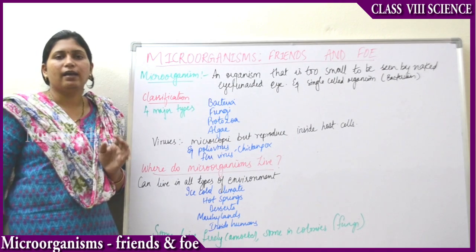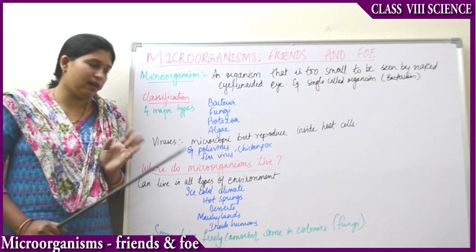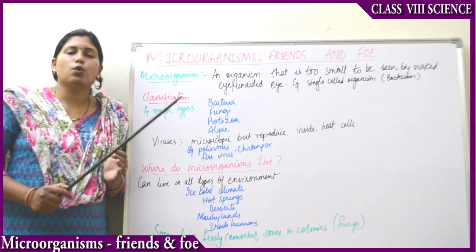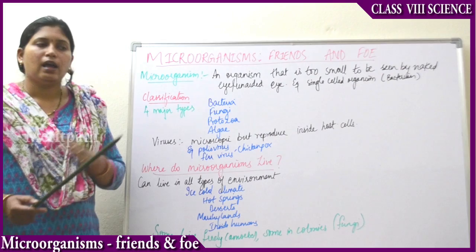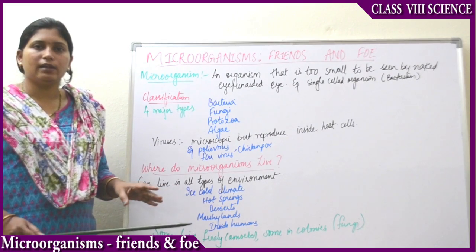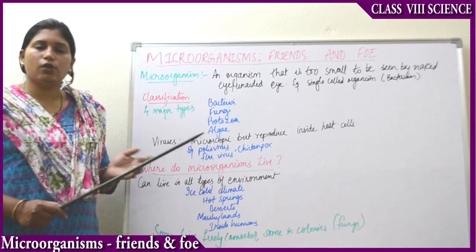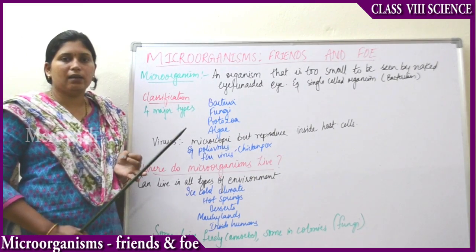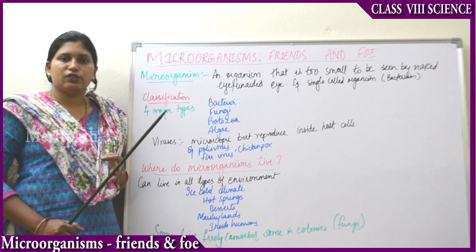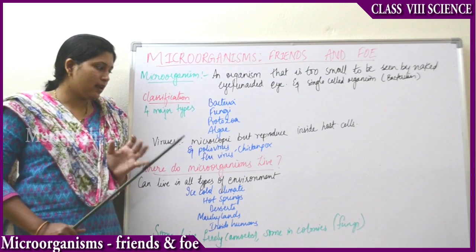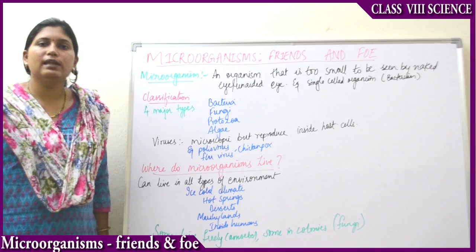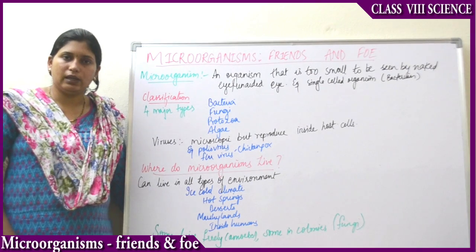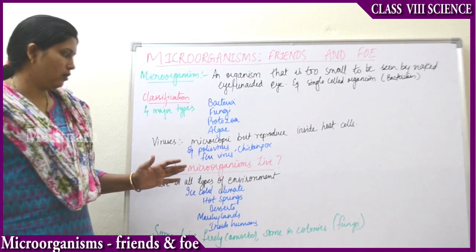You might be wondering why we aren't talking about viruses. Viruses are an exception because they become living organisms only when they enter a host. Outside the host, they are not living organisms. There is some controversy about viruses — only when they enter a host organism, whether a plant, animal, or human body, do they start their life cycle. Viruses are an exception because they reproduce only inside the host cell.